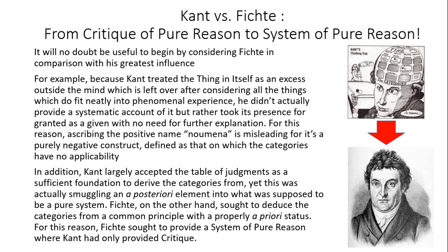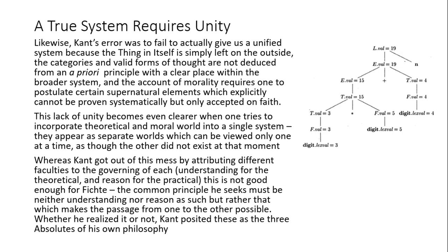Fichte, on the other hand, sought to deduce the categories from a single common principle which had to have a properly a priori status. For this reason, Fichte sought to provide the system of pure reason where Kant had only provided critique. Likewise, Kant's error was to fail to actually give us a unified system, because the thing-in-itself is simply left on the outside of it, and the categories are not deduced from an a priori principle with a clear place within the broader system. And finally, the account of morality requires postulating certain supernatural elements which cannot be proven systematically, but can only be accepted on faith.